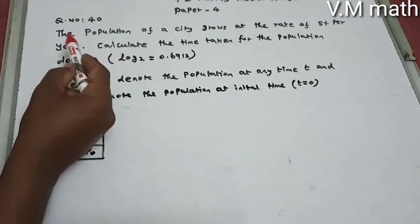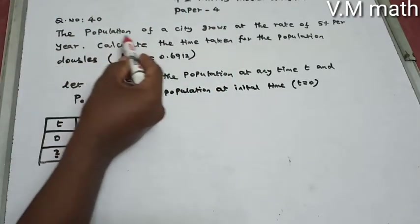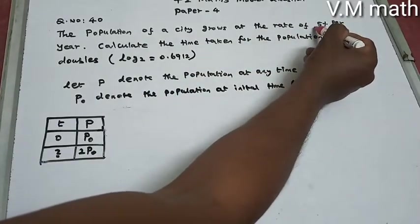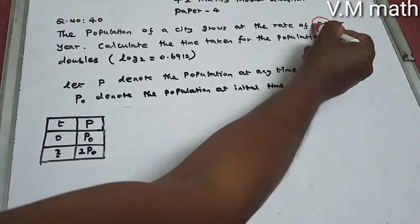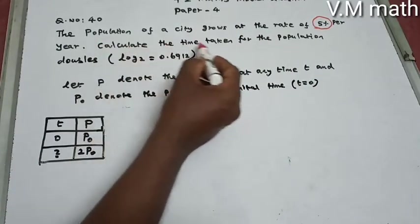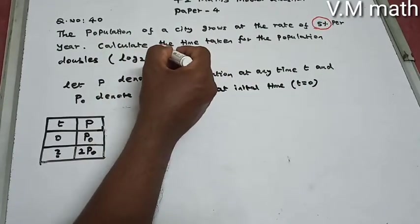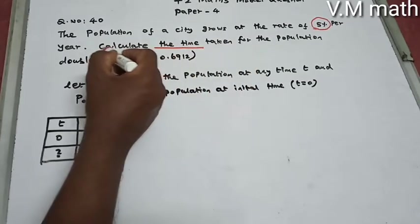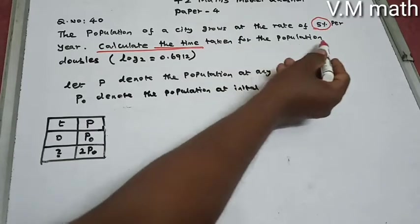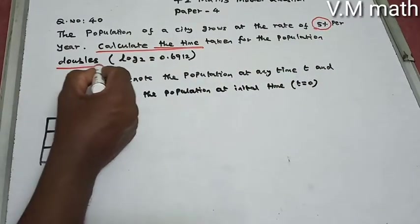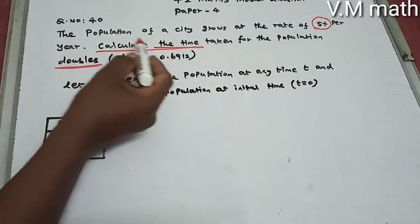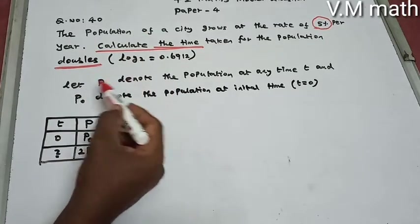Paper 4, question number 40. The population of a city grows at the rate of 5% per year. Calculate the time taken for the population to double.